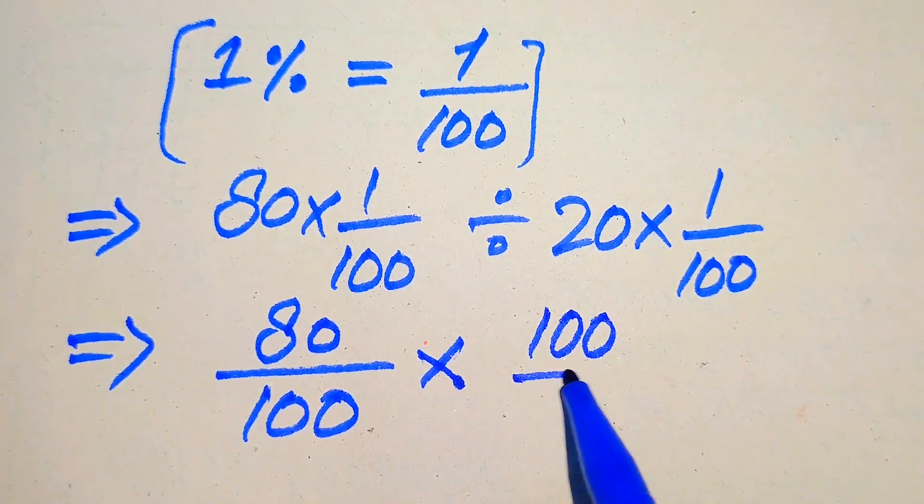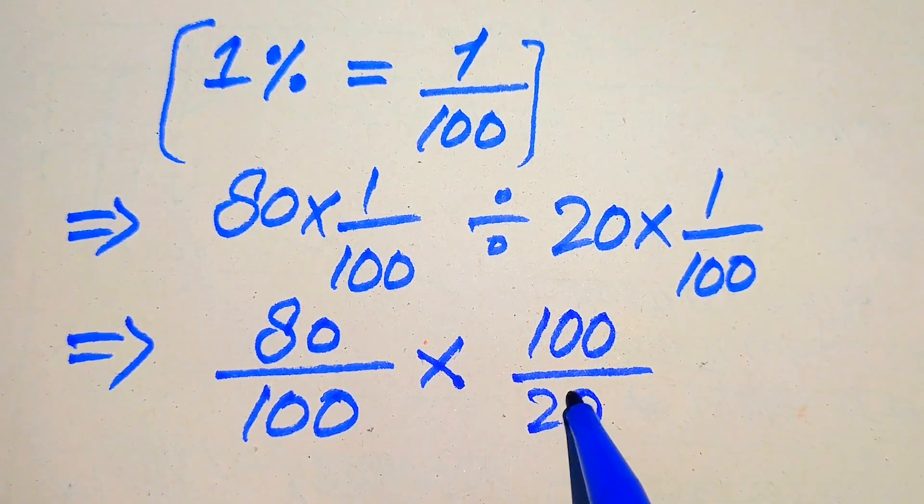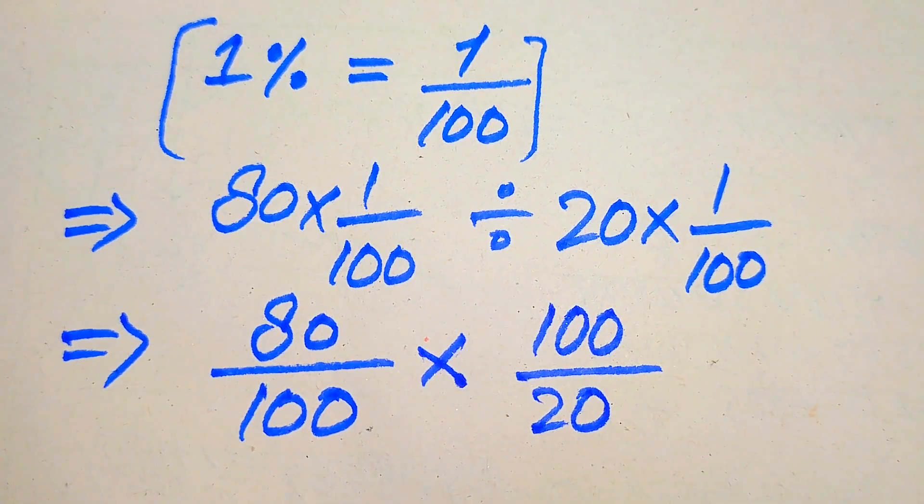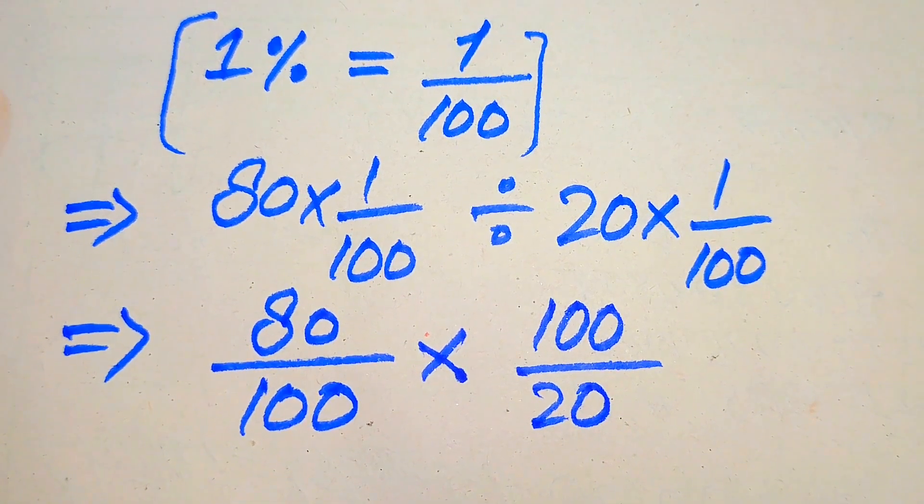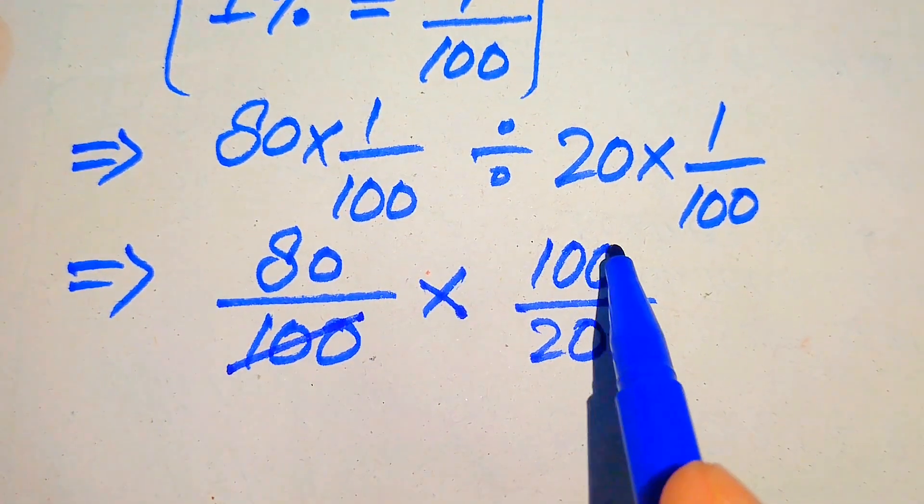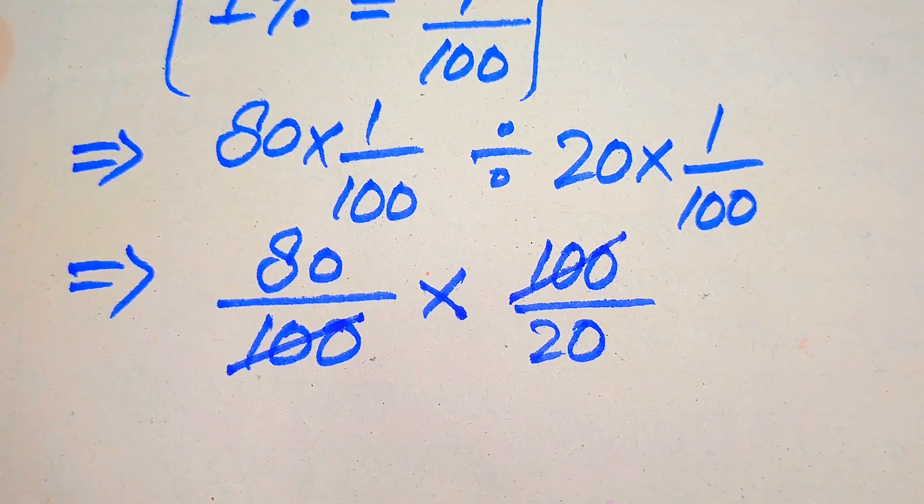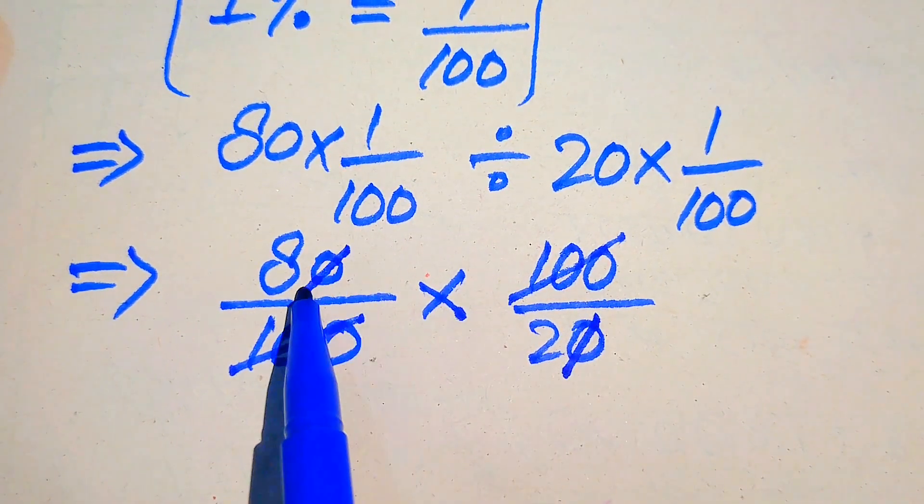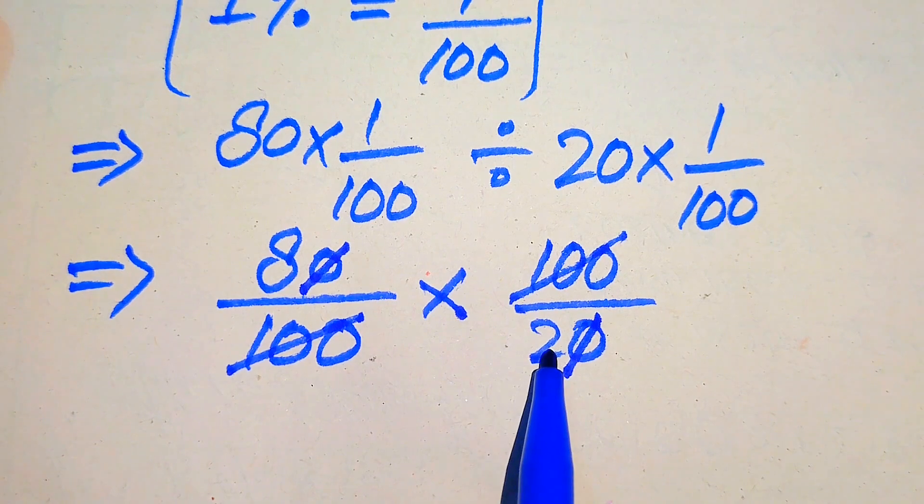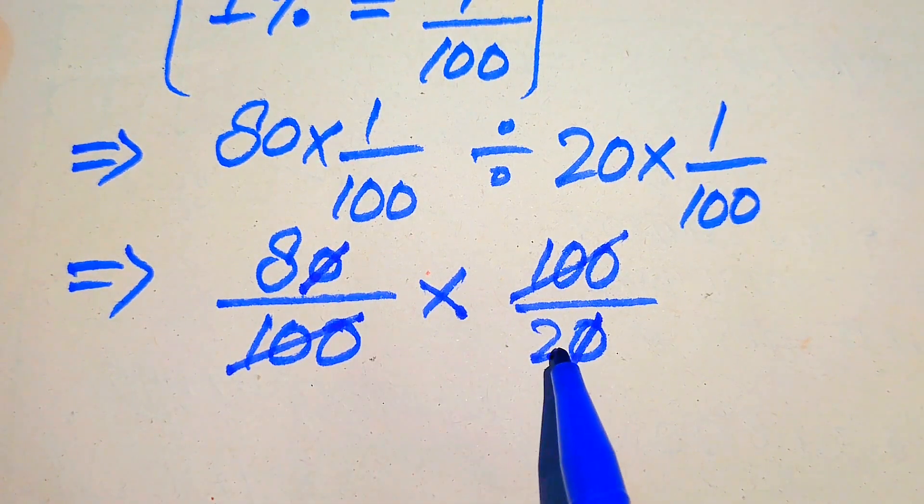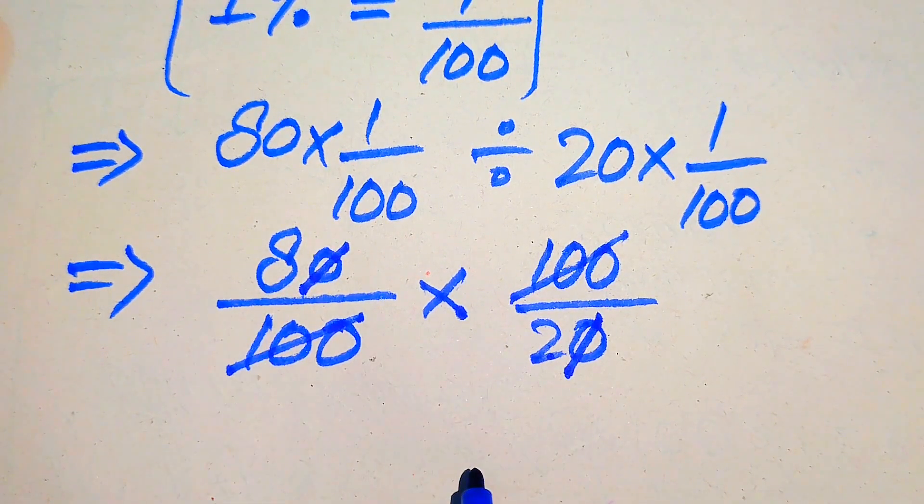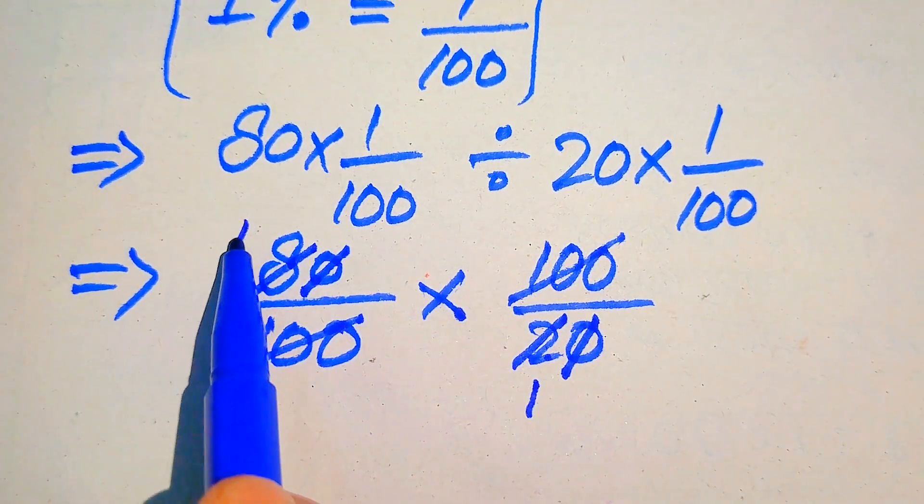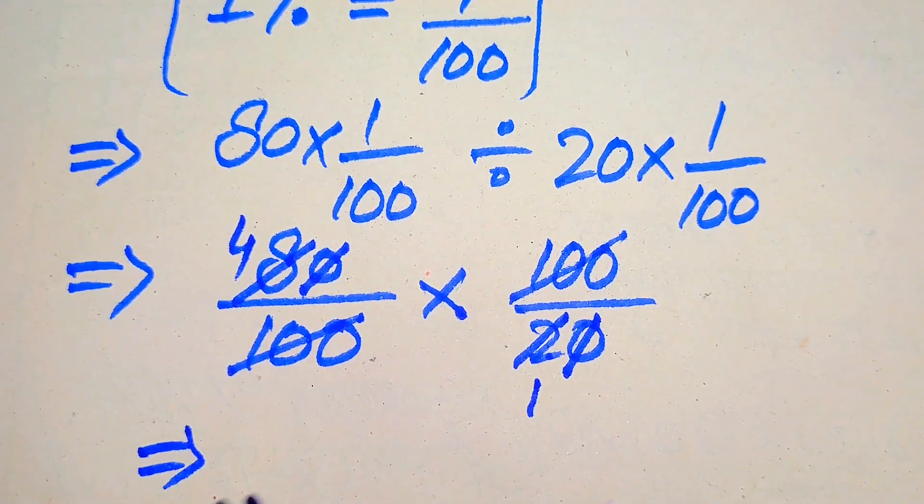Now we need further simplification. You see that this 100 is cancelled out by this 100, and this 0 is cancelled out by this 0. Again we cancel these terms—we cancel this 2 and 8 in the table of 2. We have 2 ones are 2 and 2 fours are 8.